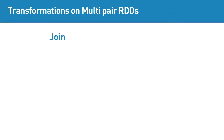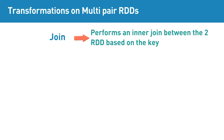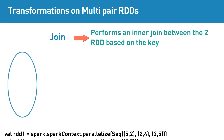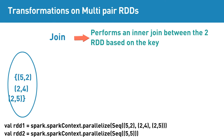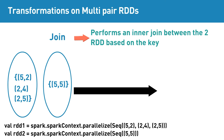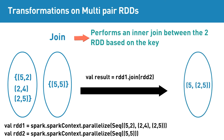Join is a multi-pair RDD transformation that does an inner join between the two RDDs based on the key. As you know, inner join returns only the common elements between two datasets. As an example, if input RDD1 contains elements 5-2, 2-4, 2-5, and input RDD2 contains 5-5, then applying join transformation will return elements as highlighted, since 5 is the only common key between the two RDDs.